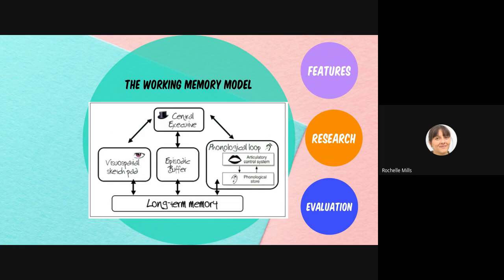The central executive, the visuospatial sketchpad, episodic buffer, phonological loop — you need to make sure that when you are explaining what each of these do, you are also including information such as the coding and capacity of the working memory model as a whole. Remember, it's focusing on short-term memory, so the capacity of short-term memory is very small. I will go through the capacity of some of the specific parts of the working memory model.